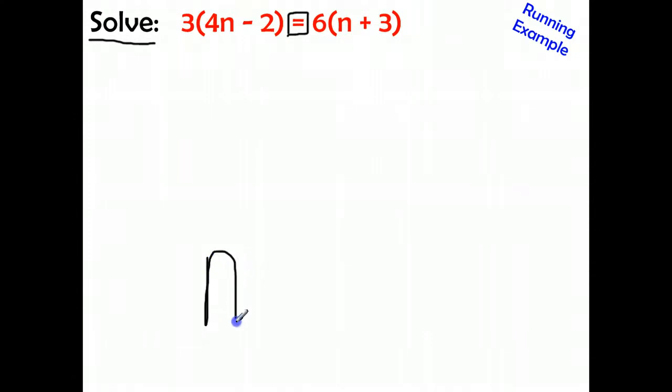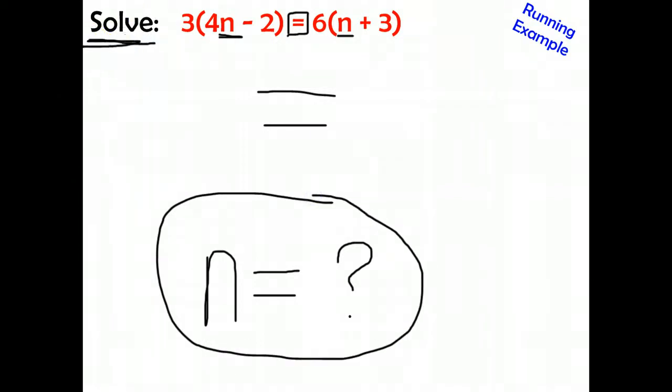What does that mean? It means you're looking for the value of the variable that when you plug that number back into the variable, n here and n there, it's going to make the left side of the equation equal the right side of the equation. That's a very important thing about solving or finding the solution to any type of equation. So this is the running example.